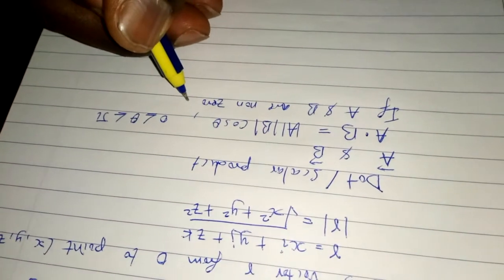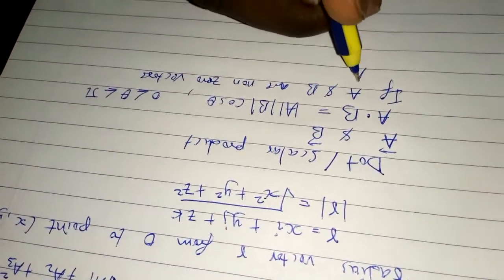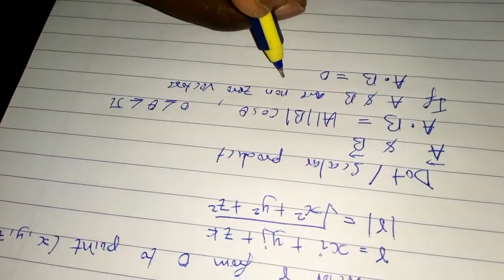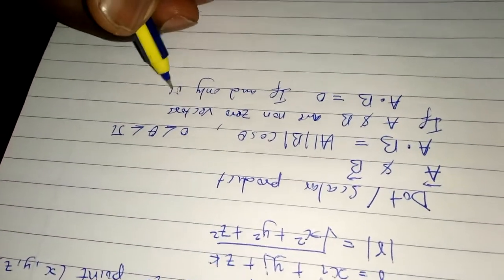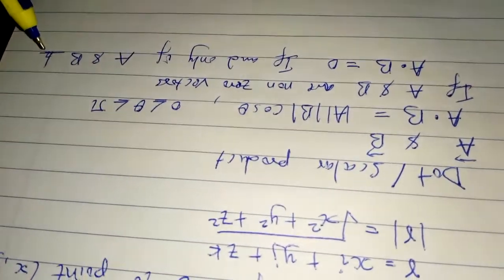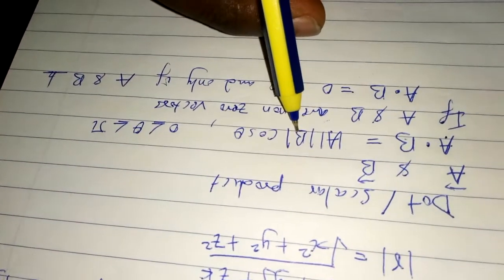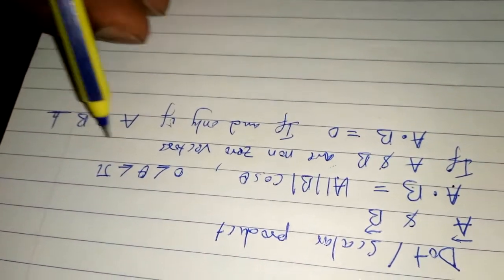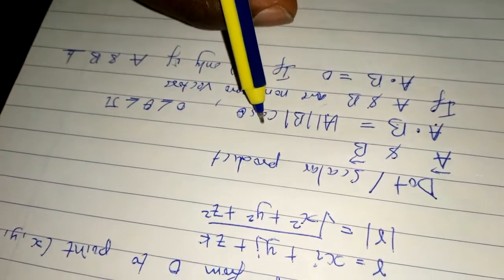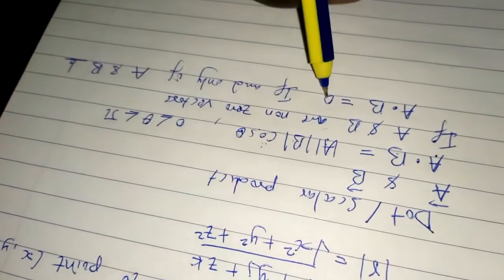If a and b are non-zero vectors, then the dot product a·b will equal zero under one condition: if and only if a and b are perpendicular to each other — that is, they are orthogonal. Since a·b = |a||b|cosθ, and perpendicular means 90 degrees, the cosine of 90° equals zero, so the resultant product becomes zero.